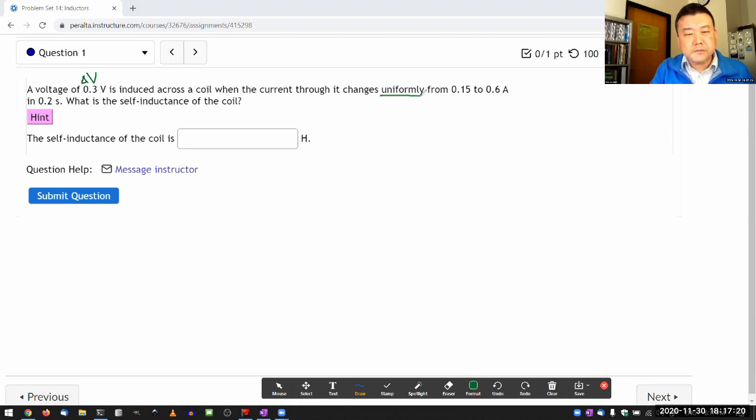Uniformly, I guess, means at a constant rate. It's giving me the change of current and the duration of time. It asks what is the self-inductance of the coil.